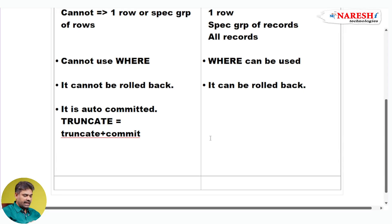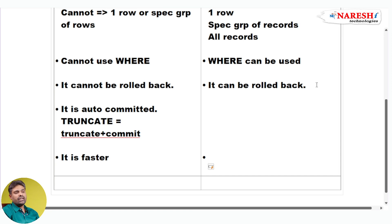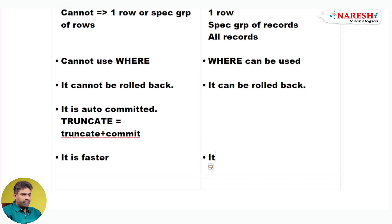The next difference is: between TRUNCATE and DELETE, which one works faster? TRUNCATE is faster. Whenever our requirement is deleting all rows with good performance, then only go for TRUNCATE — otherwise we never use it. TRUNCATE has only one purpose: whenever we want to delete all rows with good performance. So comparing TRUNCATE with DELETE, TRUNCATE is faster and DELETE is slower.